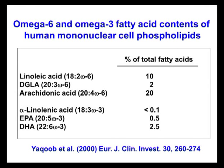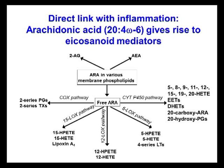This has particular functional significance, because arachidonic acid is the precursor of eicosanoid mediators intimately involved in inflammation. The arachidonic acid in the cell membrane phospholipids is released as free arachidonic acid when the cell is stimulated, and that arachidonic acid acts as a substrate for various cyclooxygenase and lipoxygenase enzymes, and some other enzymes as well, giving rise to eicosanoid mediators like prostaglandins, thromboxanes, leukotrienes, and so on.